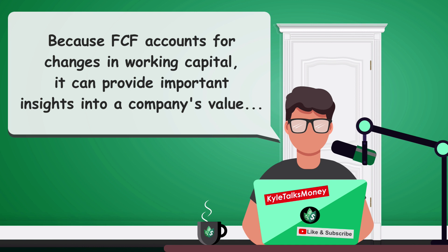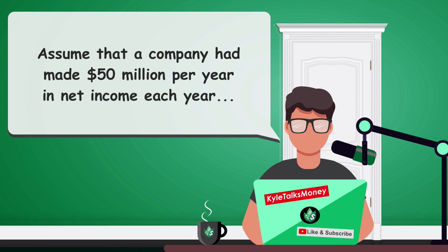Including working capital as a measure of profitability provides an insight that is missing from the income statement. For example, assume that a company had about $50 million dollars per year in net income each year for the last decade — on the surface that seems stable. But what if free cash flow has been dropping over the last two years as inventories were rising, customers started delaying payments, and vendors began demanding faster payments? In this situation, free cash flow would reveal a serious financial weakness that wouldn't have been apparent from the income statement alone.